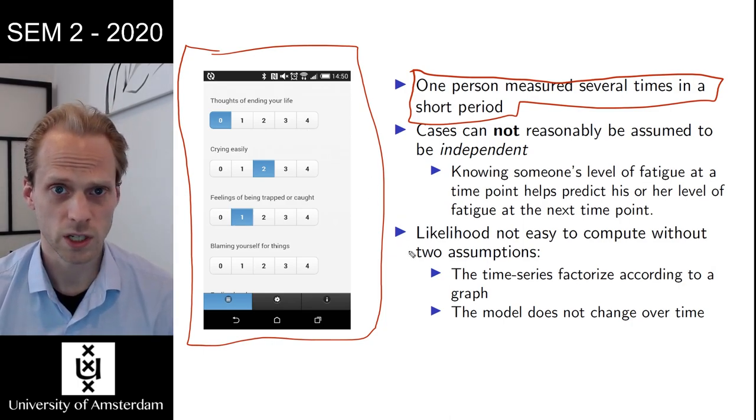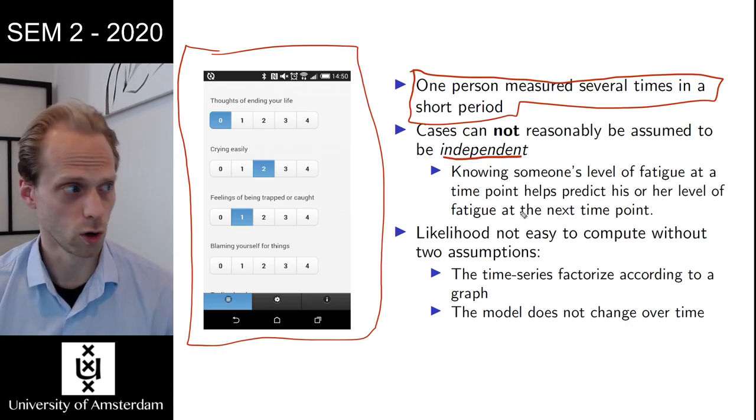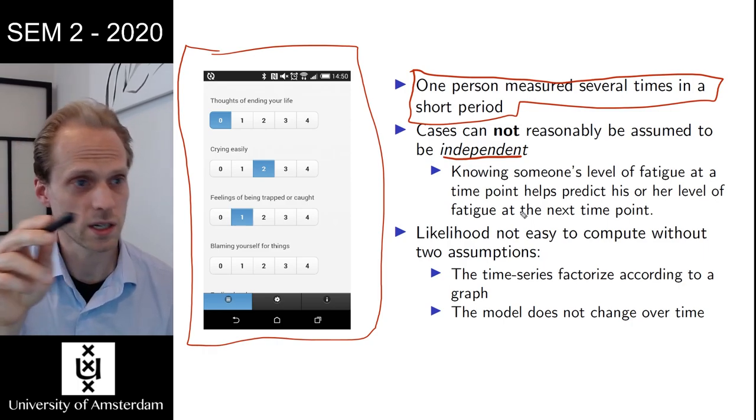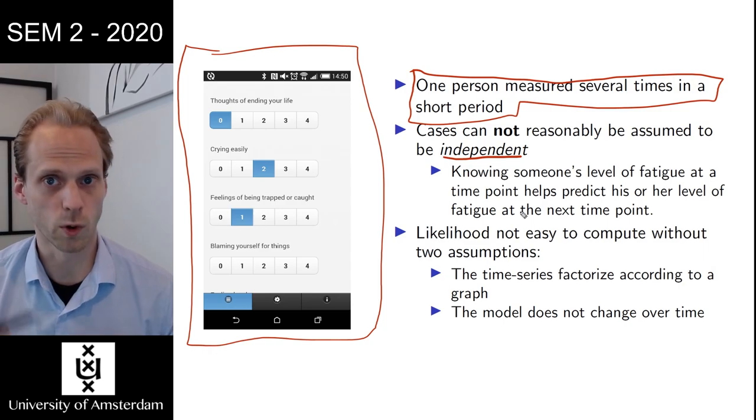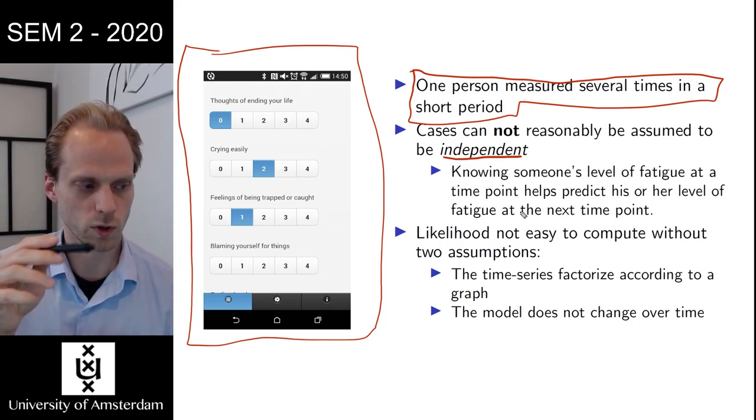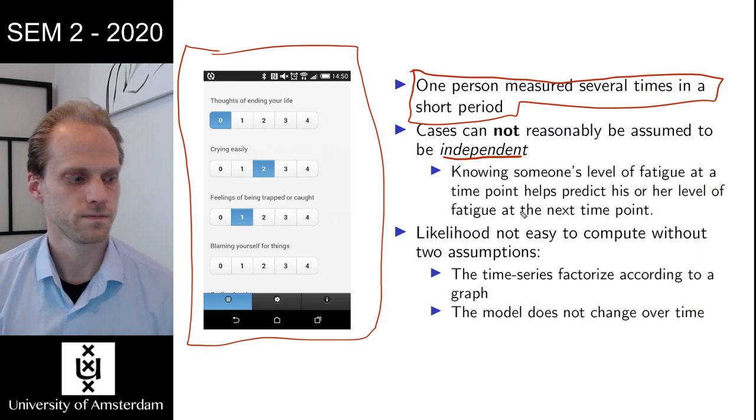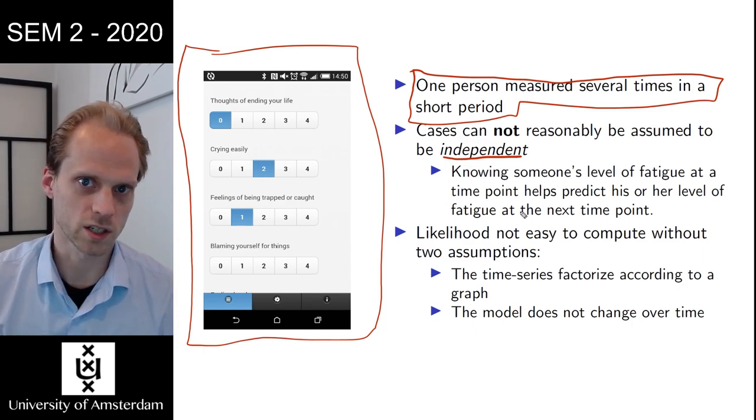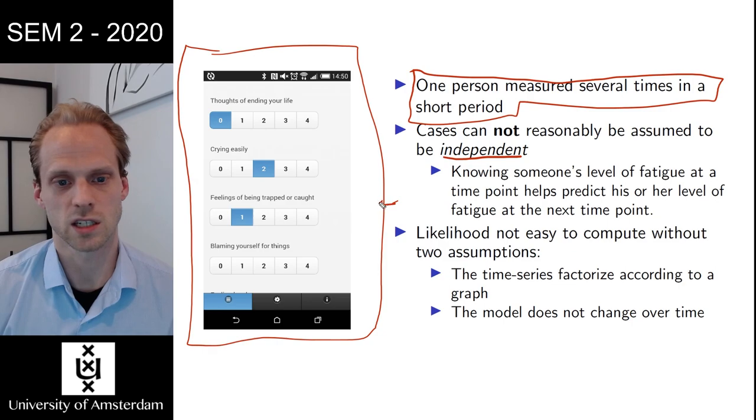The main problem with this kind of data is that we cannot assume cases to be independent. Normally we have our rows in the dataset, and those are people's observations, and we expect these to be independent. So there's not actual correlations between these observations. And that's very important because the likelihood is a product, or the log likelihood is a sum, if and only if cases are independent.